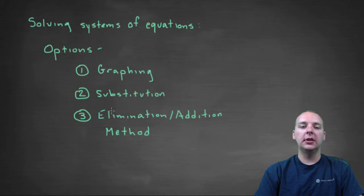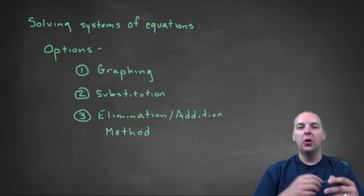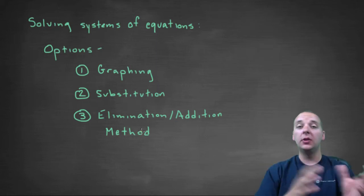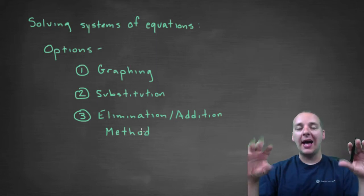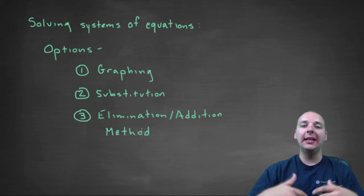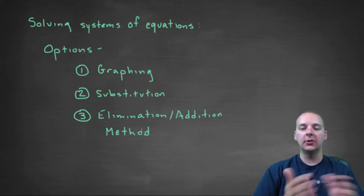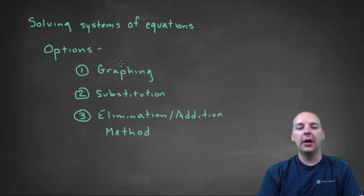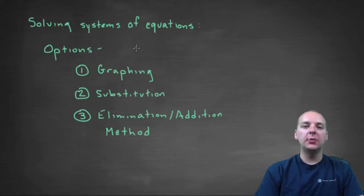Or you can use something called either the elimination method or the addition method - it goes by different names in different textbooks. So you can use that method where you line up the different variables on one side of the equation, then you add the two equations together and it eliminates either the x or the y.